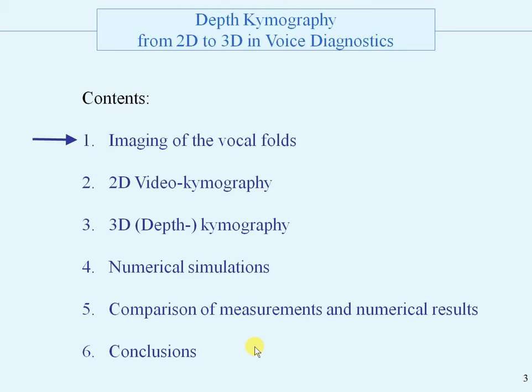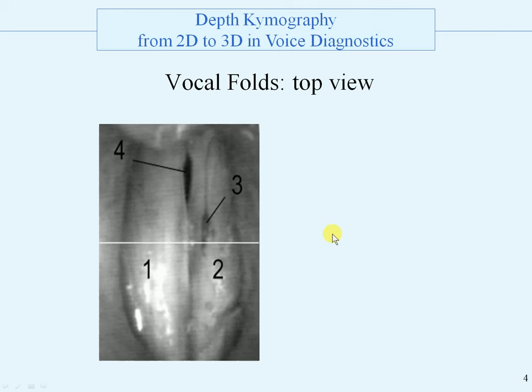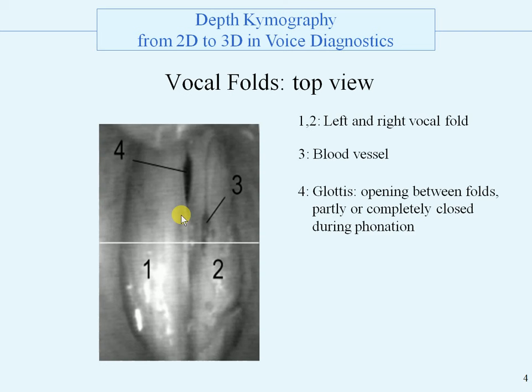First, imaging of the vocal folds. This is the top view of the vocal folds. 1 and 2 are the left and right vocal folds, 3 is the blood vessel, and 4 is the glottis — the opening between the folds — opening or closing during phonation, during producing of vowels.